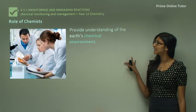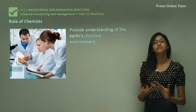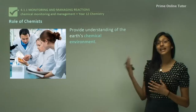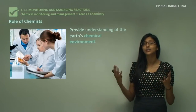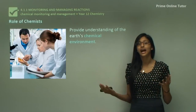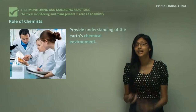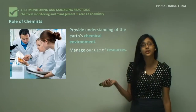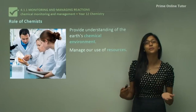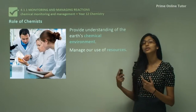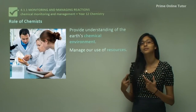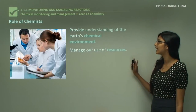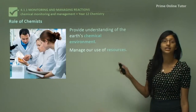Chemists provide us with understanding of the earth's chemical environment. There are very different kinds of chemicals in the land and in the atmosphere, so they look at how they interact with each other and how the chemicals interact with us. The chemist also helps us to manage our use of resources. For example, fossil fuels are running out, so we need to know how to use our resources in a very efficient way, and chemists can actually help us with that.